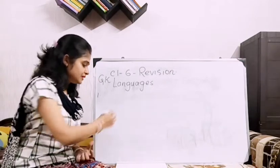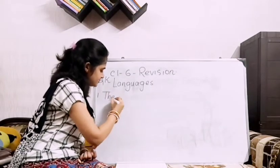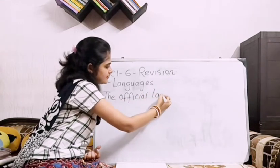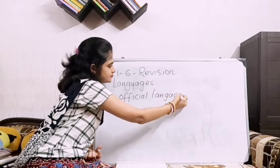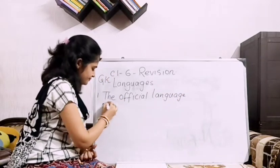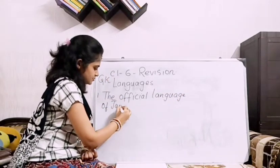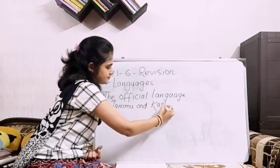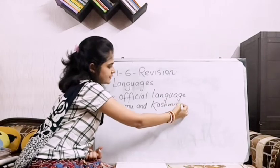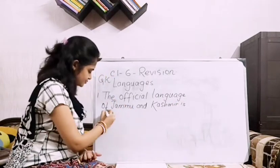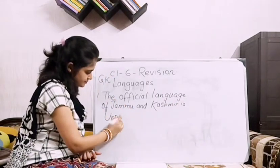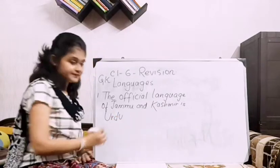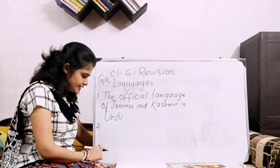Question 1: The official language of Jammu and Kashmir. The answer is Urdu. We will write it here — not in capital letters — Urdu.